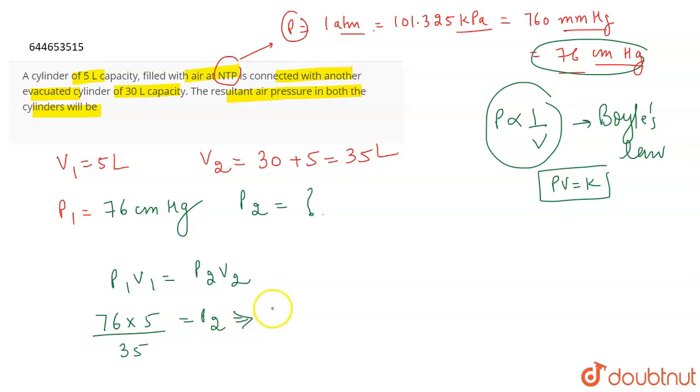So from here, P2 will come out to be 10.8 centimeter of Hg, right? So this is the resultant air pressure in both the cylinders, and that's the correct answer for the question.